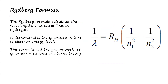The Rydberg formula is used to calculate the wavelength of the spectral lines in hydrogen. It demonstrates the quantized nature of electrons' energy levels and lays the groundwork for quantum mechanics in atomic theory. In the formula, lambda is the wavelength, R is the Rydberg constant, and the N values represent the energy levels of the electrons. Each series has its own N value.